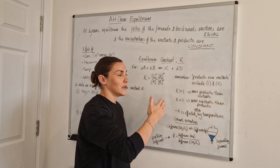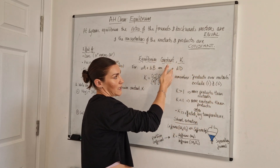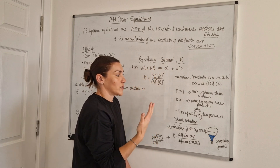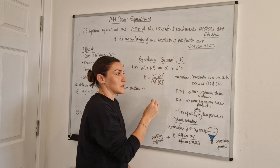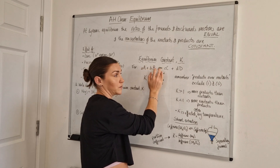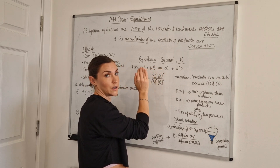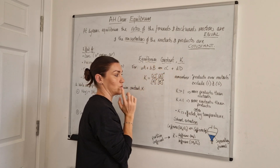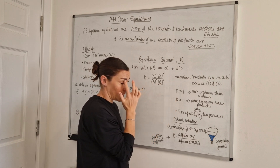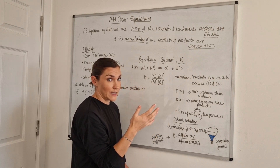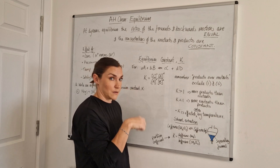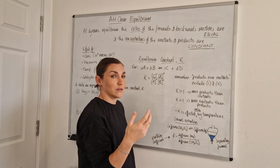If your K value is really high, the equilibrium sits to the right, producing much more product than reactant. If your K value is a very low decimal, the equilibrium sits to the left, with much more reactant than product. Sometimes K can be very high, like 600, and sometimes it can be very low, like 0.something — both are valid.